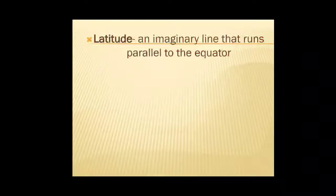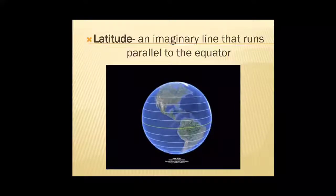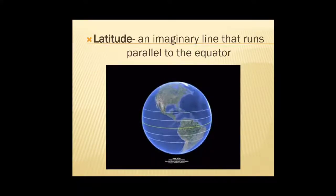First, please take page number 97 in your content book children. The first new word is latitude. Latitude is an imaginary line which runs parallel to the equator. This image will show you the latitude. It is an imaginary line which runs from west to east and also runs parallel to the equator.